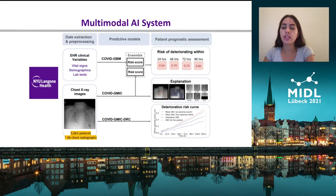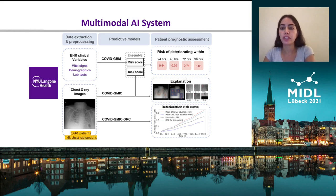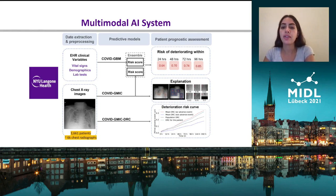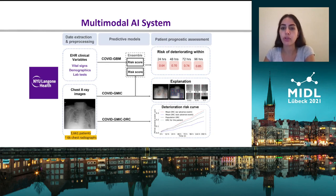Here's an overview of our AI system. We were using data collected at NYU Langone Health, and we developed three predictive models: two of which predicted the risk of deteriorating within 24 to 96 hours, and then the third predicted how this risk would evolve over time, which is COVID-GMIC-DRC.